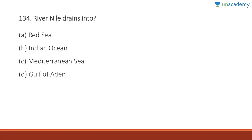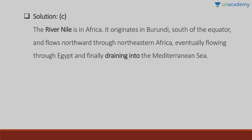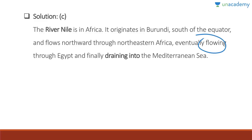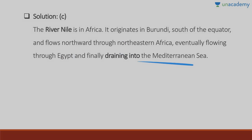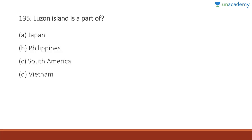Question 134: River Nile drains into which water body? The Nile drains into the Mediterranean Sea. It originates in Burundi, south of the equator, flows northward through northeastern Africa, passes through Egypt — considered a cradle of civilization for the last 5,000-6,000 years — and finally drains into the Mediterranean Sea.